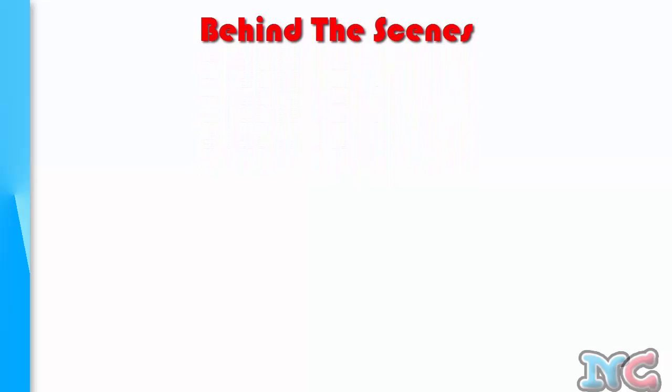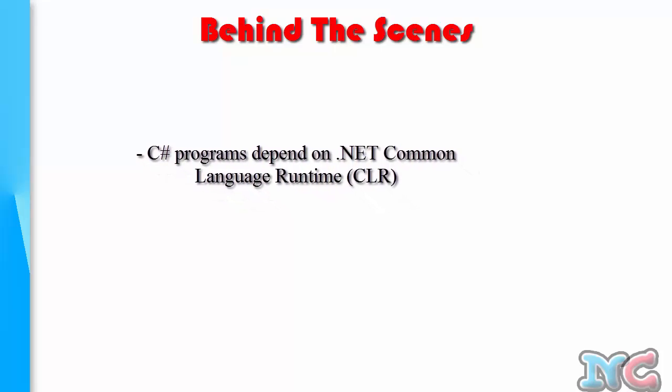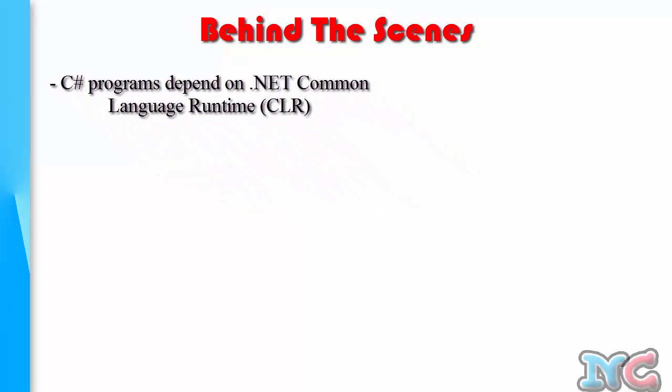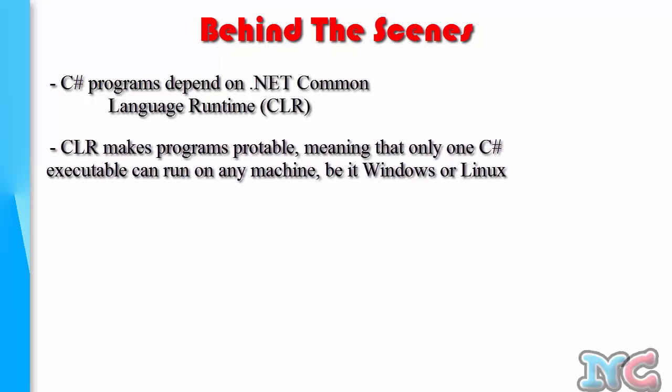But what happens behind the scenes? The .NET framework contains a Common Language Runtime, or CLR, that converts our file into machine language. The CLR is a library that contains all the procedures, routines, and components required to make C# programs portable — meaning a program written on Windows can run on Linux if .NET capabilities are available there.